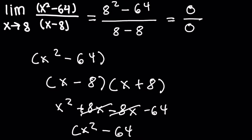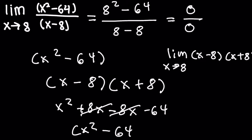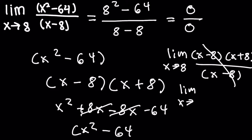Now that we have it factored, we have the limit as x approaches 8 of (x minus 8)(x plus 8) over x minus 8. The x minus 8 terms cancel, leaving the limit as x approaches 8 of x plus 8. Plugging in 8 gives 8 plus 8, which is 16. So the final answer is 16.